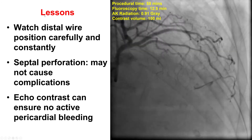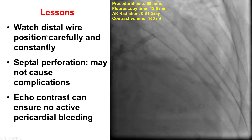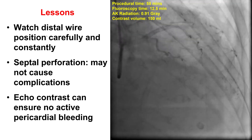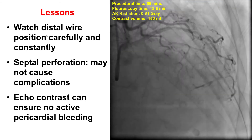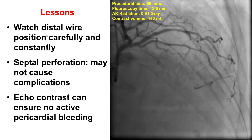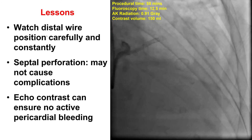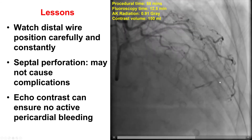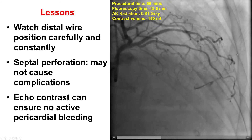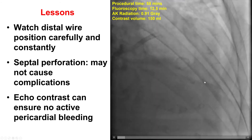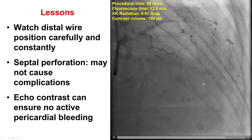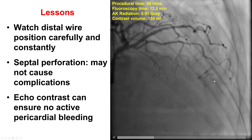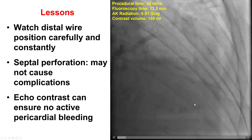Several take-home lessons from this case. First is the importance of watching the distal wire position carefully at all times. This is especially important when we have difficulties delivering equipment, because the wire can move back and forth and could inadvertently enter a side branch causing perforation, as happened here. If perforation does occur, it is better to have it in a septal branch versus an epicardial branch, as the septal may not cause a problem or may communicate directly with the cardiac cavity.